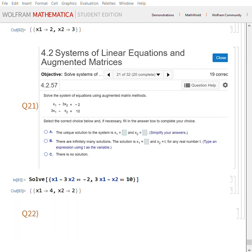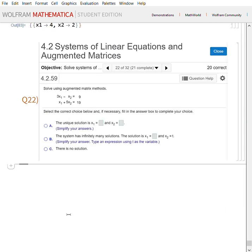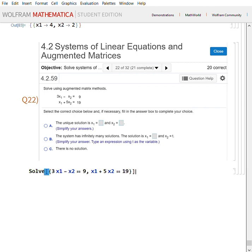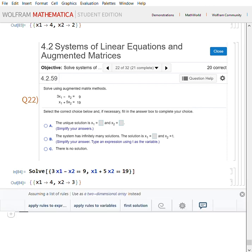Q22 says solve using augmented matrix methods. So once again, same old command. 3x1 minus x2 equals 9, comma, x1 plus 5x2 equals 19. Close curly bracket, big bracket, Shift+Enter. And you have a unique solution to the system of x1 equals 4 and x2 equals 3.